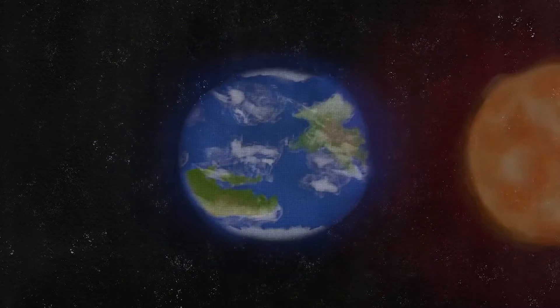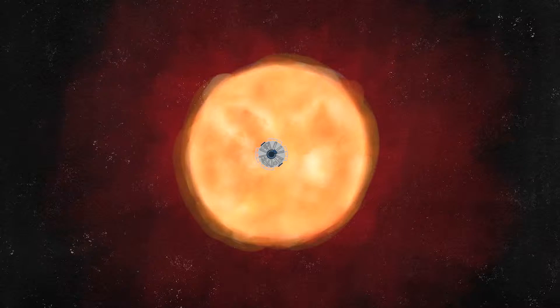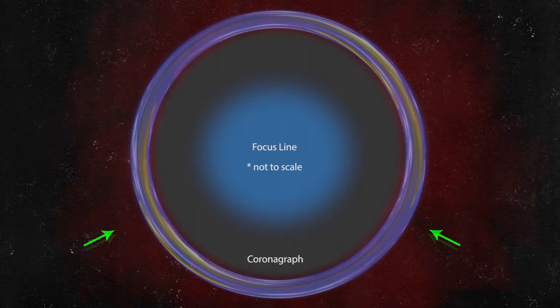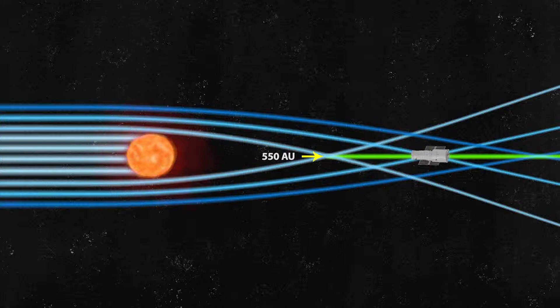Before imaging can begin, something has to be done about the Sun. The telescope needs to face the Sun to image the exoplanet, but its light would outshine the exoplanet. Since the Einstein ring is around and outside the Sun, an internal coronagraph can be used to block the Sun and the brightest part of the corona. There will still be some corona light mixed in, but not enough to overwhelm the exoplanet's light. For the coronagraph to be more effective, the telescope needs to be positioned further back on the focus line — a good compromise is between 650 and 800 AU.